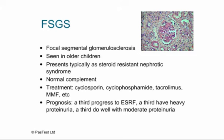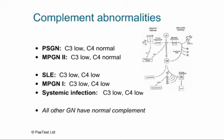To finish the nephritides section, let's review complement abnormalities. All other glomerulonephritides have normal complement — only two patterns need to be remembered. A low C3 with normal C4 is seen in post-streptococcal GN and MPGN Type 2. A low C3 with low C4 is seen in lupus, MPGN Type 1, and overwhelming sepsis. Keeping those in mind allows you to tackle most questions about complement abnormalities in glomerulonephritis.